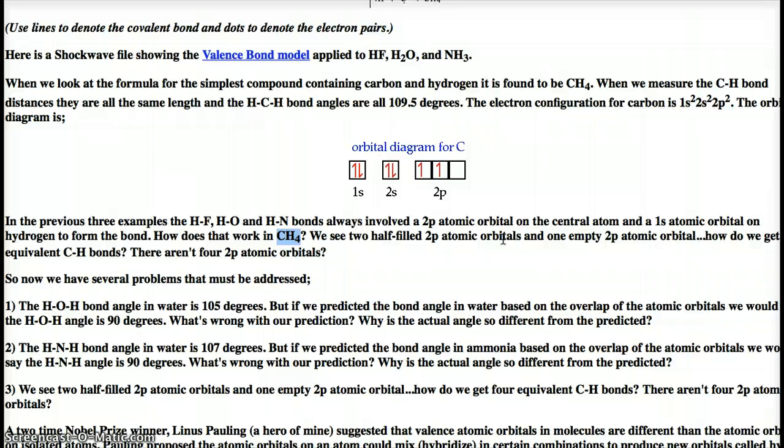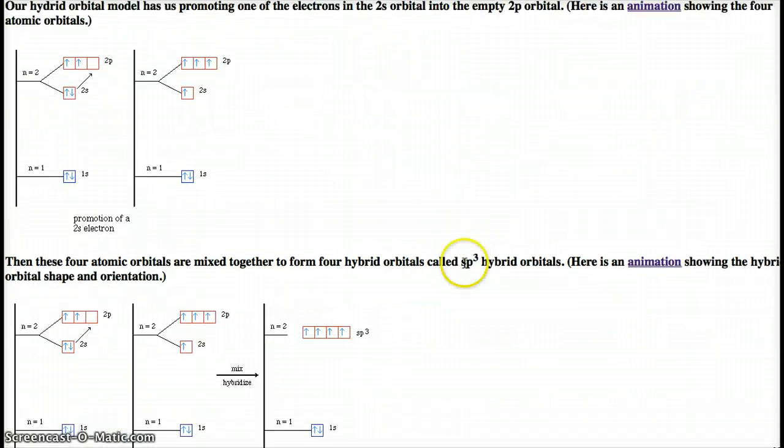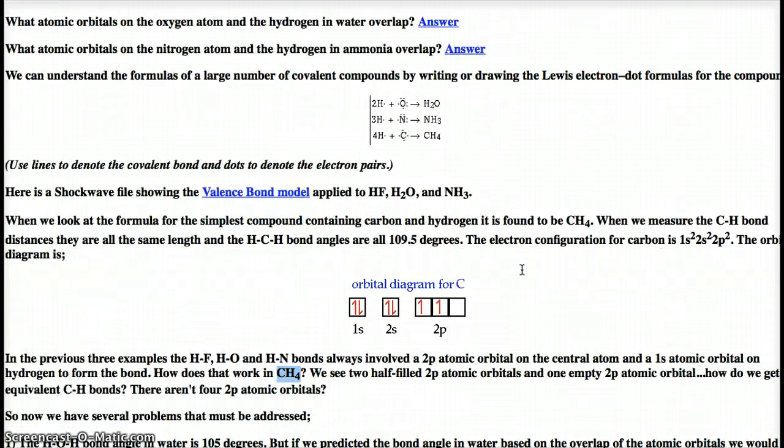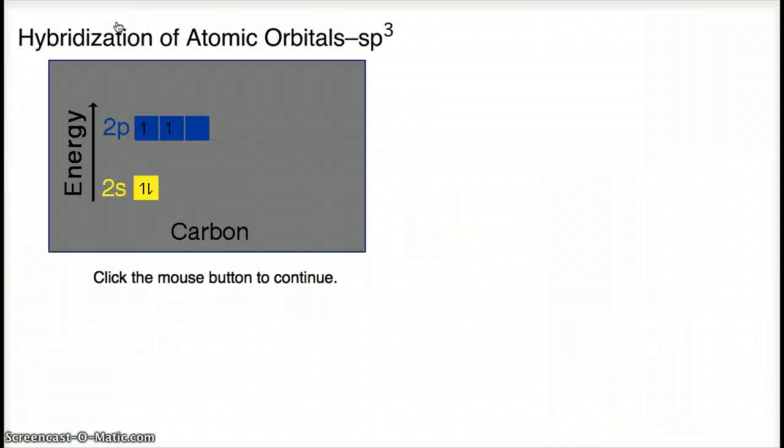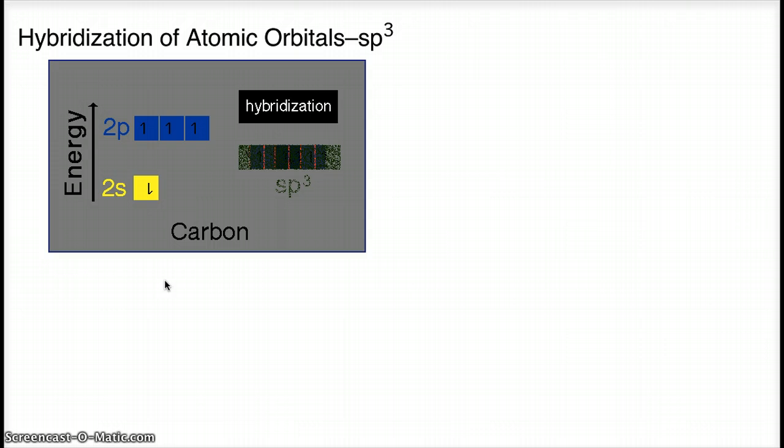There's some controversy about orbital hybridization, whether we should be talking about it or whether it even exists, but it's a good theory that helps explain, and it's still being used today. Looking at the orbital diagram, it does look like carbon should only share two. We know CH₄ exists and carbon forms four bonds, so how can we explain it? That's what valence bond theory does. An electron is promoted from the 2s to the 2p, and then these four electrons in those orbitals hybridize and create four identical sp³ orbitals.